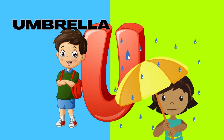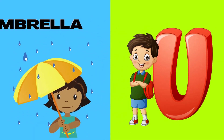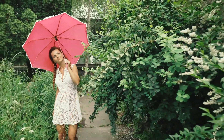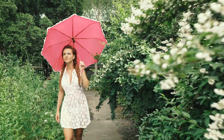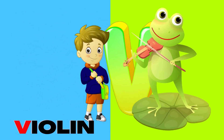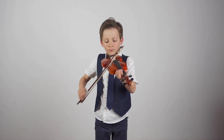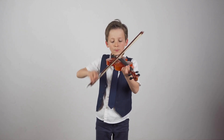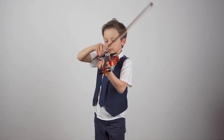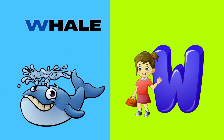U is for Umbrella. U-U-Umbrella, U-U-Umbrella. V is for Violin. V-V-Violin, V-V-Violin, V-V-Violin. V, Violin.